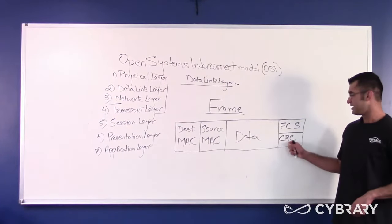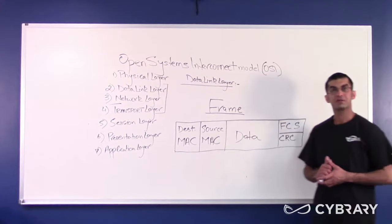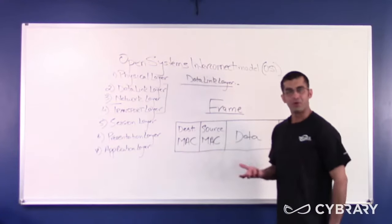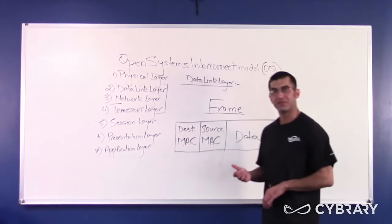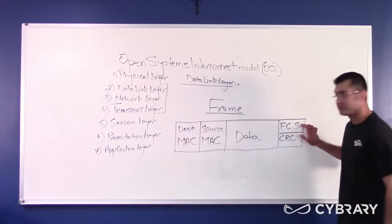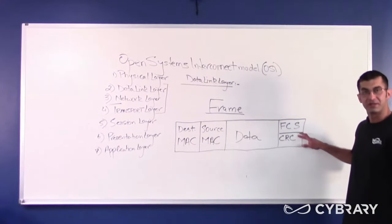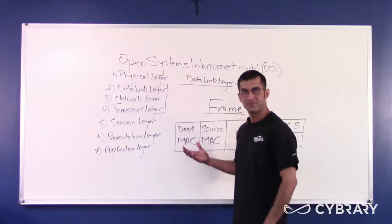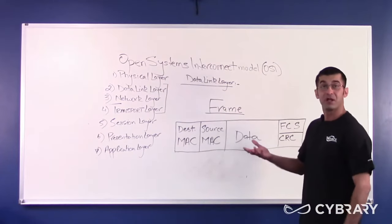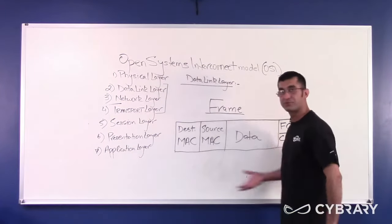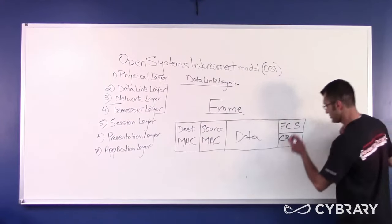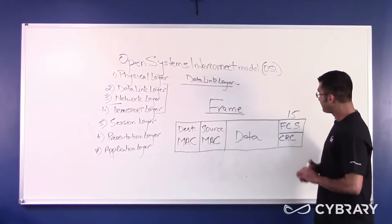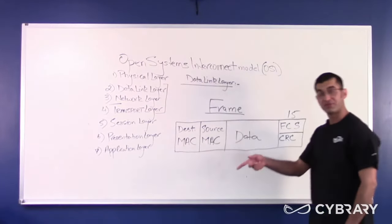What is the cyclic redundancy check? Before the transmitting device transmits the frame, it performs a calculation. There is an algorithm inside the frame check sequence called the cyclic redundancy check, and the CRC performs a calculation on the whole frame and comes up with a number. Let's say the calculation was performed and the number it came up with was 15. The number 15 is put inside of the frame check sequence, and the frame is transmitted.